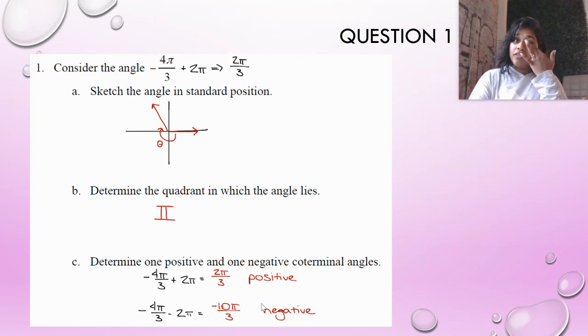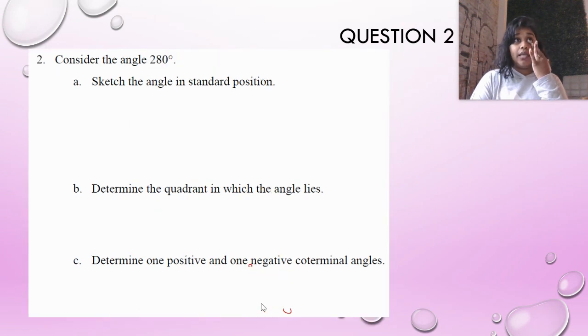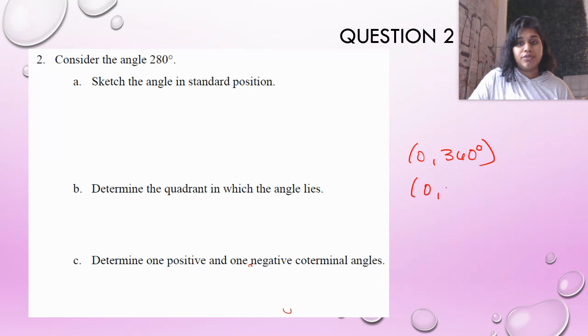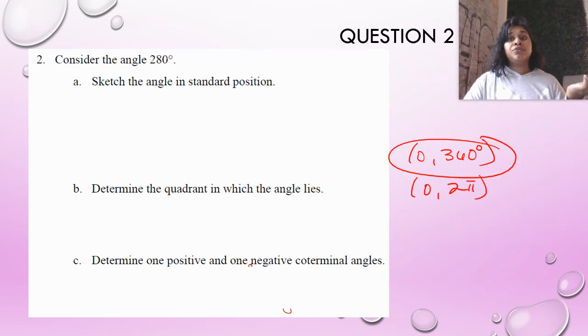Let's see what that looks like for an angle given to us in degrees and not radians. So consider the angle 280 degrees. Sketch the angle in standard position. So we ask ourselves, is it a radian or a degree? It's a degree. So am I between 0 to 360 degrees, or am I between 0 to 2π? I know I'm between 0 and 360. I'm already between 0 and 360, so I'm good to go. I don't have to adjust it. Go ahead and sketch it in standard position. I sketched it.